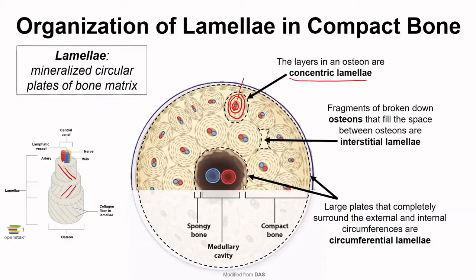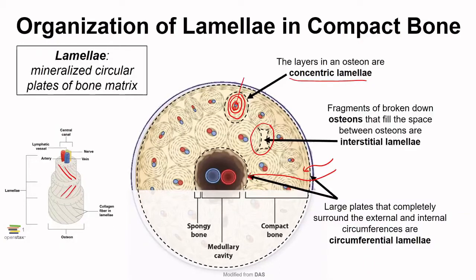Next, the spaces between osteons are filled with what is called interstitial lamellae. These are made up of broken down osteons, and they are evidence that bone is constantly remodeling itself — we'll have a whole video on that coming up. Lastly, there are plates of bone that completely encircle the internal and the external circumference, and these are called circumferential lamellae.